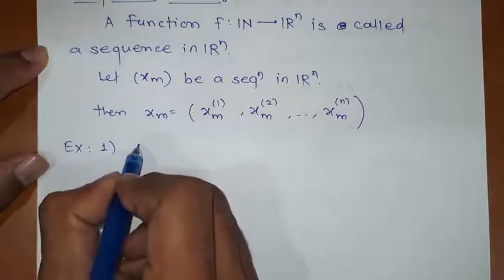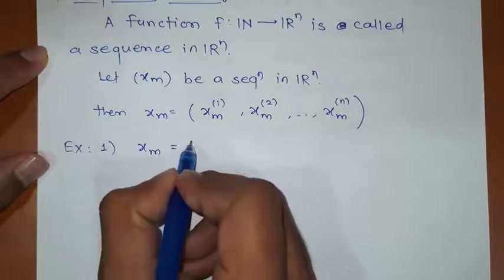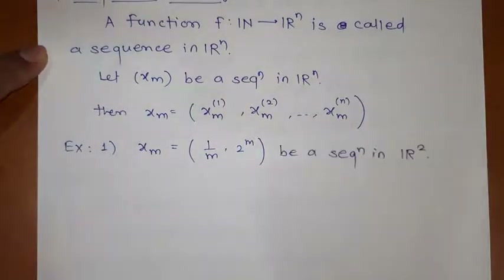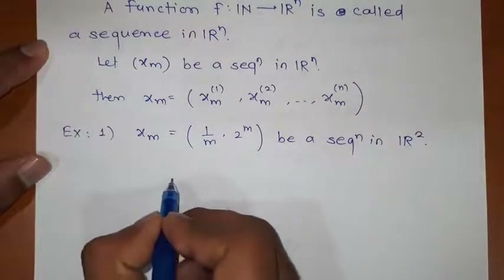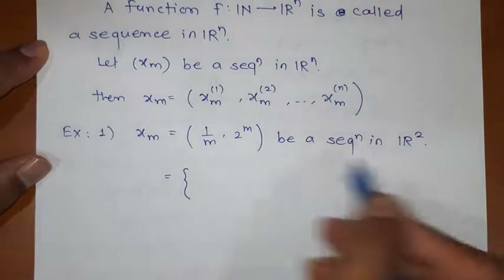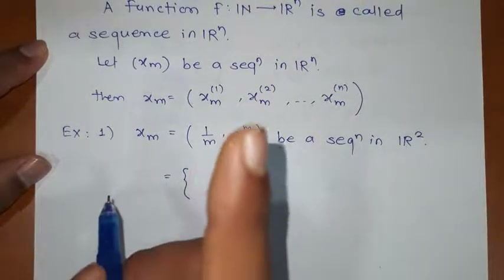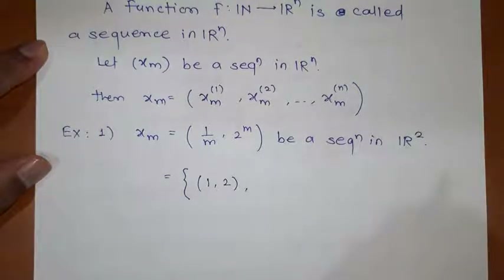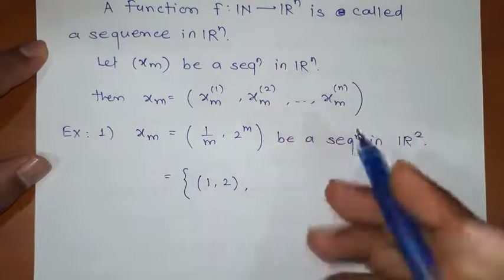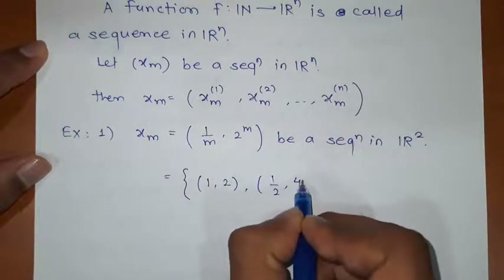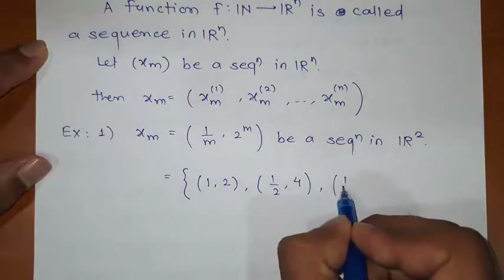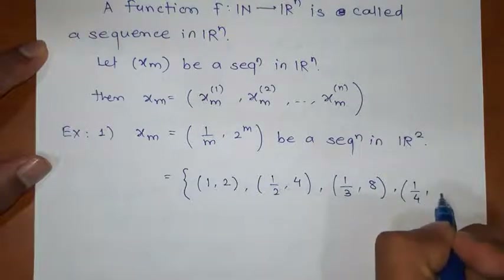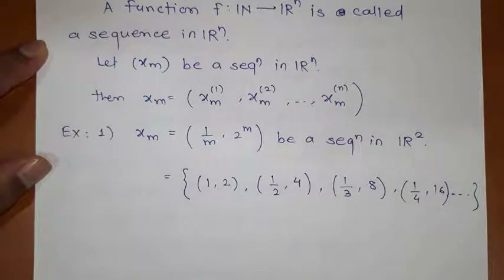The first example: I will consider xm equal to (1/m, 2^m). So I am considering a sequence in R2, so that's why it has two components. If you expand this sequence, for m=1 you get (1, 2); for m=2 you get (1/2, 4); for m=3 you get (1/3, 8); for m=4 you get (1/4, 16). In this way we will have infinite terms of the sequence.